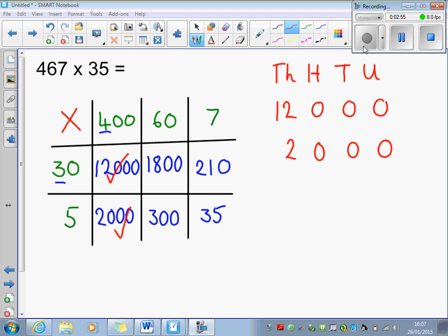Then I would go to the 1,800, and I'd make sure the 1 goes in the thousands column, the 8 in the hundreds, the 0 in the tens, and another 0 in the units. And then tick it off.